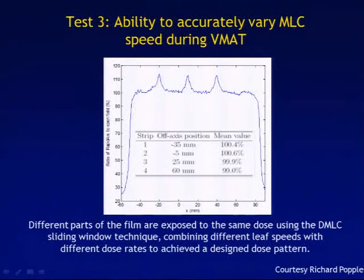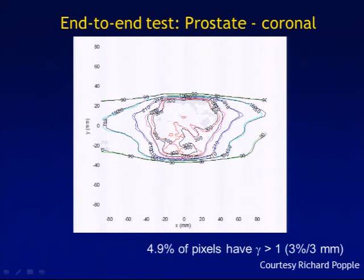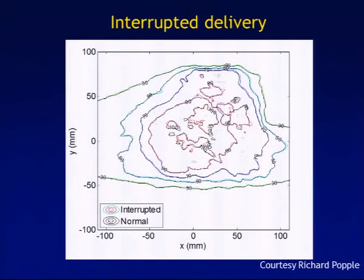The third test is testing the ability to accurately vary the multi-leaf collimator speed during VMAT. Different parts of the film are exposed to the same dose using the DMLC sliding window technique, combining different leaf speeds with different dose rates to achieve a designed dose pattern, and again showing uniformity of the mean values. In the end, what matters is being able to do end-to-end tests and verifying complete delivery accuracy. A coronal view of a prostate verification shows close match between planned and delivered isodose distributions. Another important test is the impact of interrupting the delivery — cutting off the beam during an arc multiple times to see if it impacts the accuracy of the delivered dose.